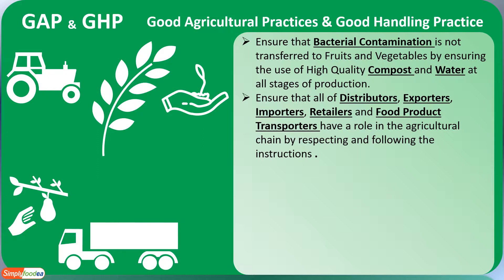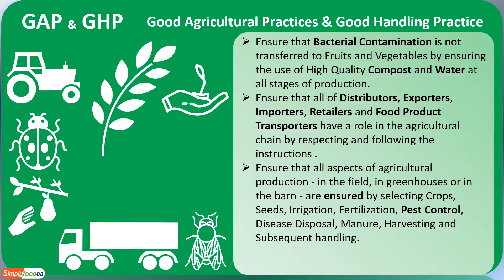The GAP and GHP ensure that all distributors, exporters, importers, retailers, and food product transporters — who have a role in the agriculture chain — respect and follow all the instructions of GAP and GHP.